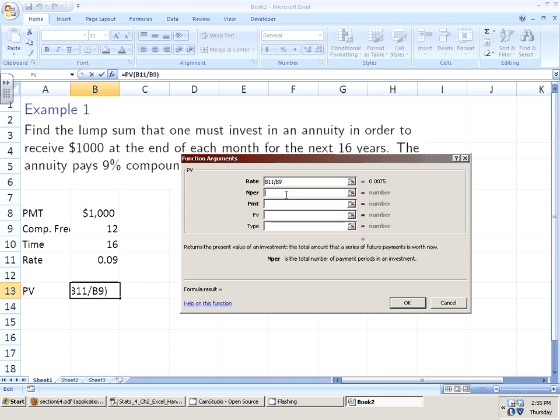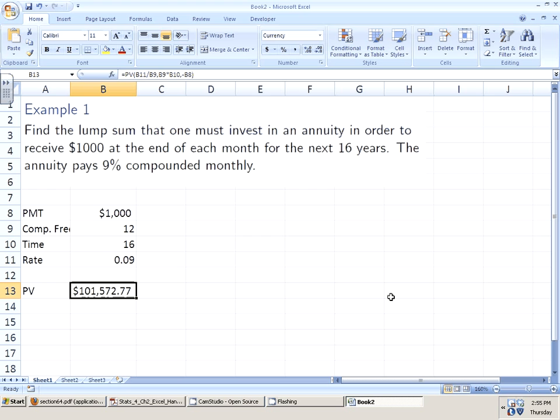Well it's rate divided by compounding frequency. The compounding frequency times the time in years. That's for the number of periods. And the payment, $1,000. Well again, I need that negative sign there. So what that means is that in order to live this out, I need $101,572.77.